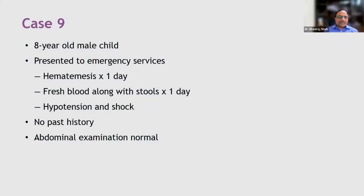This is an eight-year-old male child who presented to emergency services with hematemesis for one day along with fresh blood in stool for one day. The child presented with low blood pressure and poor peripheral pulses, and had been resuscitated with fluids and blood. There is no past history, and abdominal examination at the time of presentation was normal — meaning there was no hepatosplenomegaly.